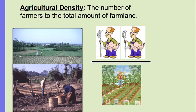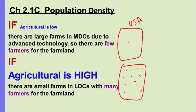The last density is agricultural density — the number of farmers per farmland. If agricultural density is low, such as one farmer for a large area of farmland, this is typical of MDCs like the United States, where very large farms and advanced technology mean very few farmers are needed. If agricultural density is high, with many farmers for the available farmland, this is typical of LDCs, where there are many farmers each with small farms.